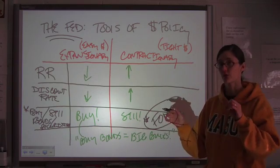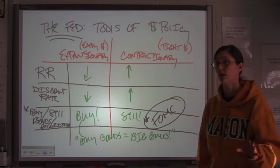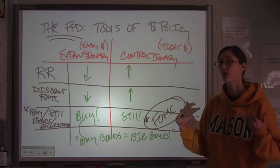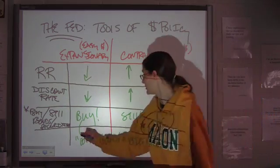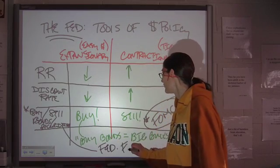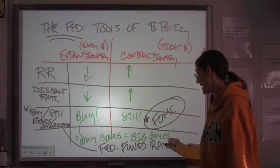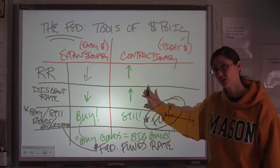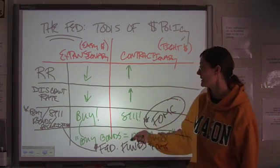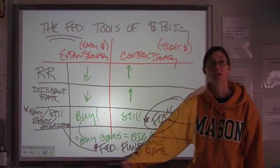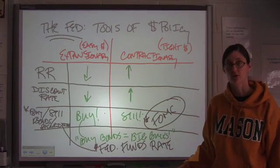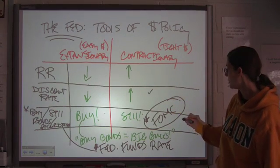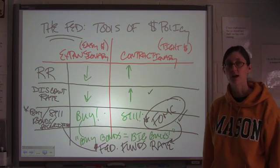So when you hear on the news that the Fed has reduced interest rates — like increased it a quarter percent or decreased it a half a percent — what they're actually doing is buying or selling bonds to put upward or downward pressure on what's called the Federal Funds Rate. Now, the Federal Funds Rate is a somewhat misleading name because it's not really federal — the Federal Funds Rate is the rate at which banks borrow money from each other. It doesn't have anything really to do with the Fed except that when the Fed is buying bonds, it puts downward pressure on the Federal Funds Rate, and when it sells bonds, it puts upward pressure on it.